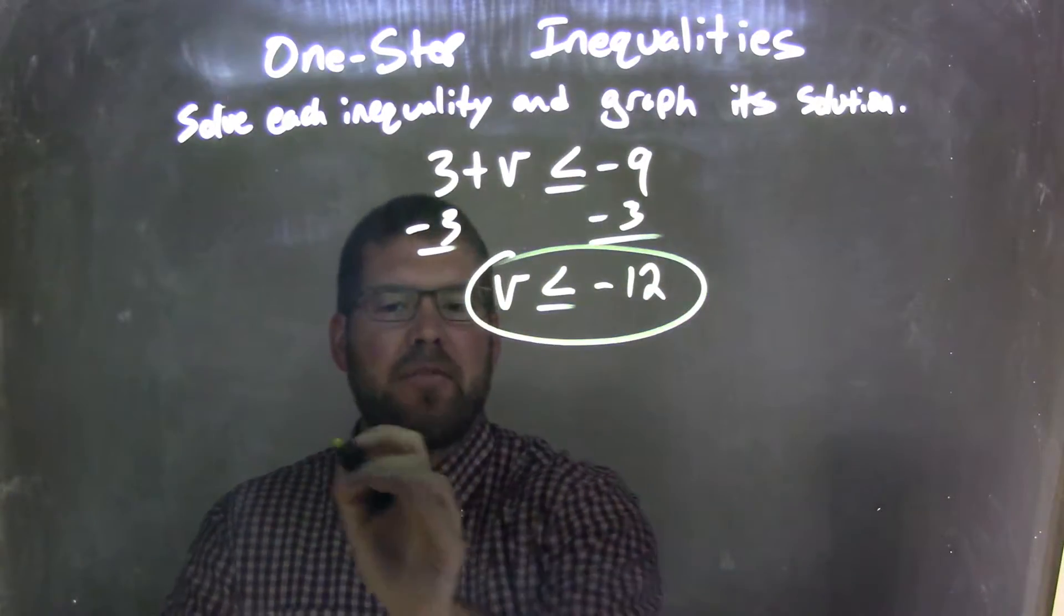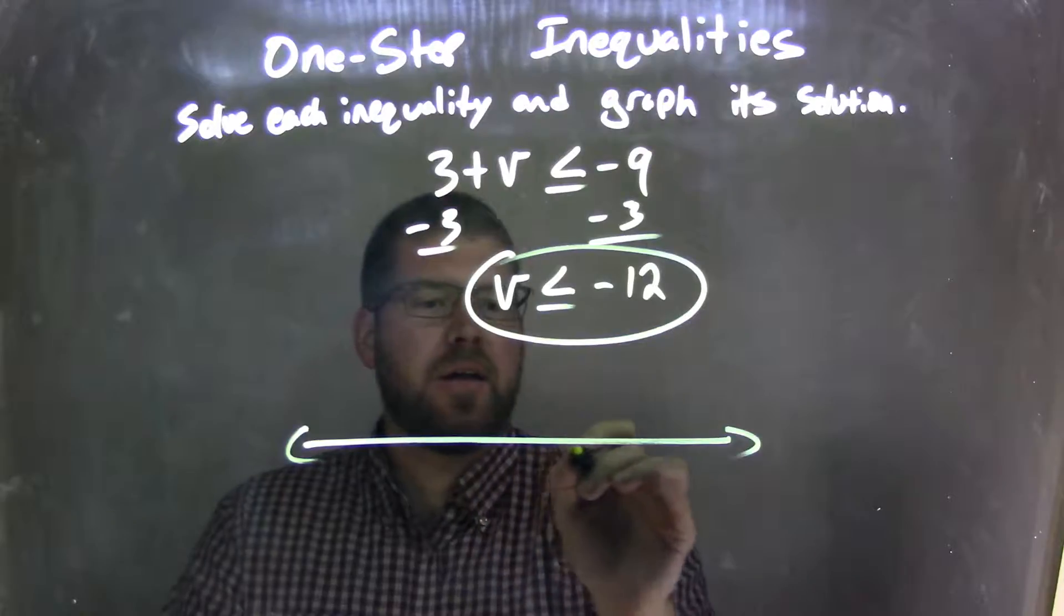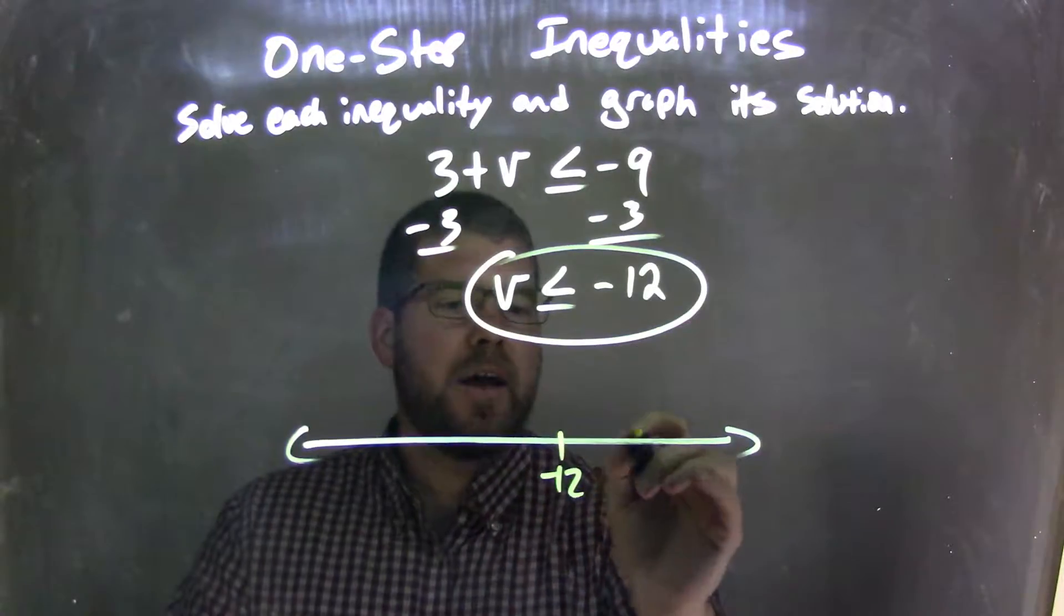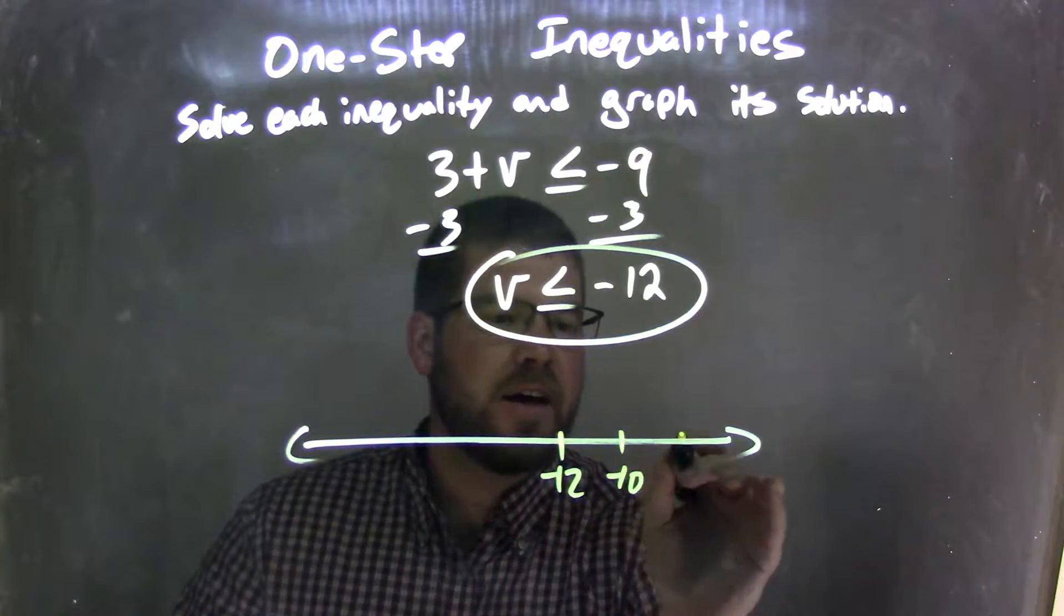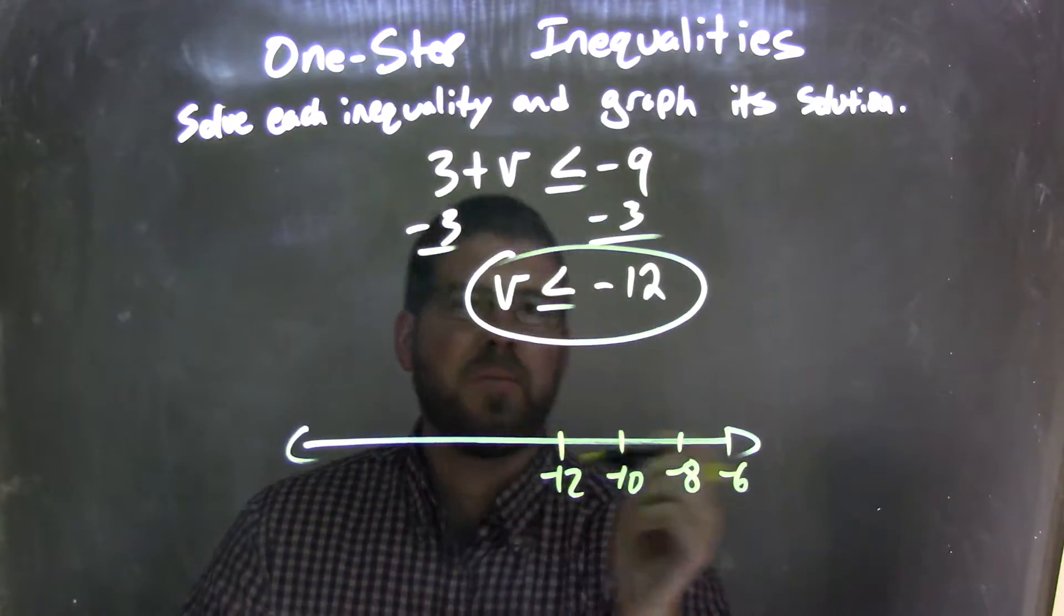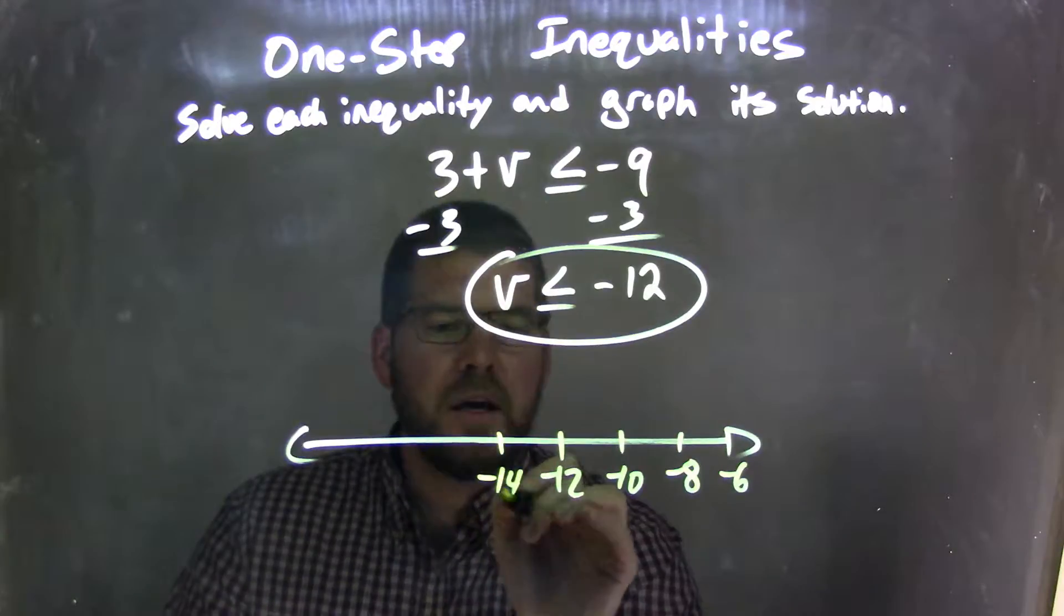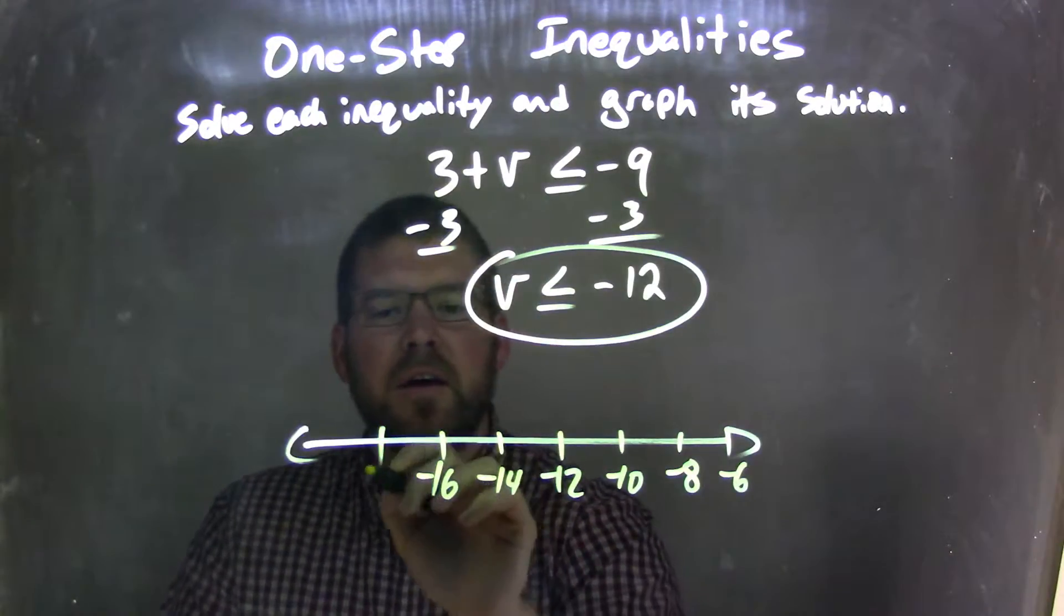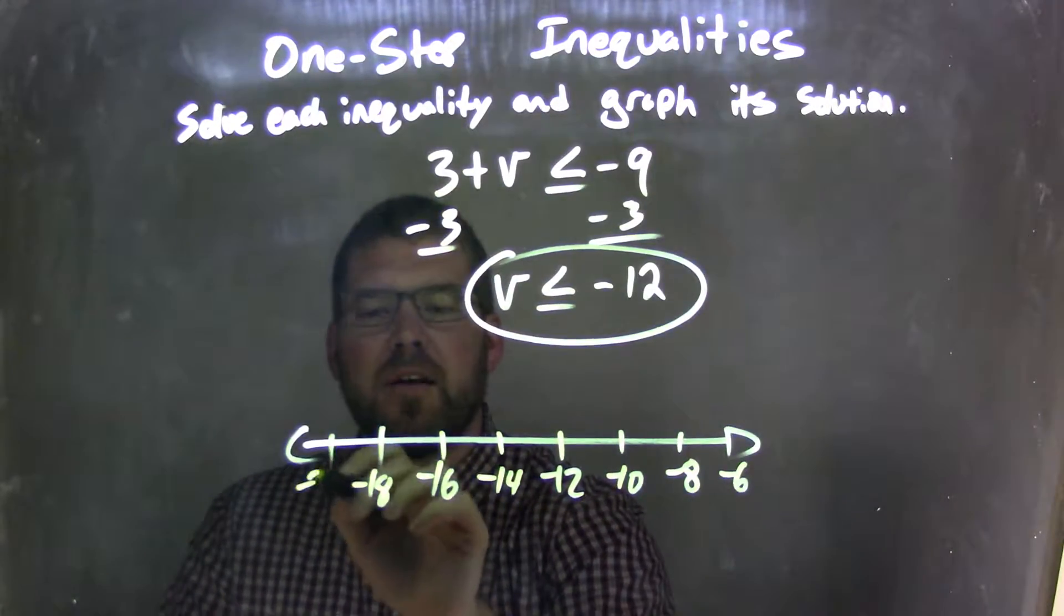But I need to graph it, so let's make a graph here. Let's put negative 12, and let's go by 2, so we have negative 10, negative 8, negative 6, and somewhere over here is going to be 0, but I don't need that far. We have negative 14, negative 16, negative 18, and negative 20.